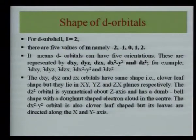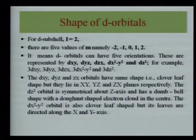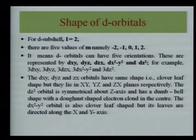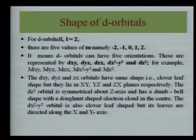The dz² orbital is symmetrical about the z axis and has a dumbbell shape with a shaped electron cloud in the center. The dx²−y² orbital is also clover leaf shaped but its leaves are directed along the x and y axes. The spdf symbols are used — s for sharp, p for principal, d for diffuse, f for fundamental — they have spectroscopic significance, which is why we do not use a, b, c, d.